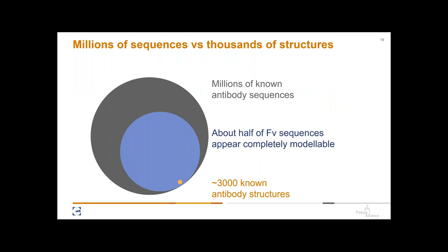In summary, we can model about half of our antibody Fv sequences completely, which is mainly driven by our inability to model all CDRH3s. If you're interested in one particular antibody and trying to model it, you have roughly a 50% chance of falling into the set we can model completely and 50% we can't. So there is a large gap in our knowledge that we need to close.